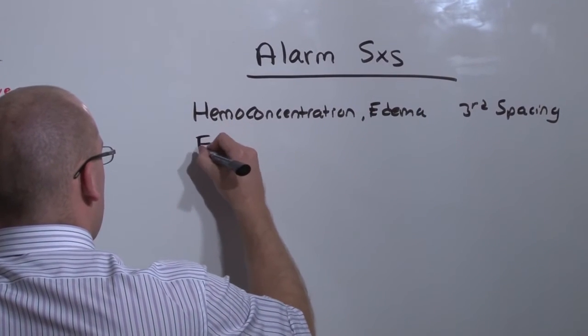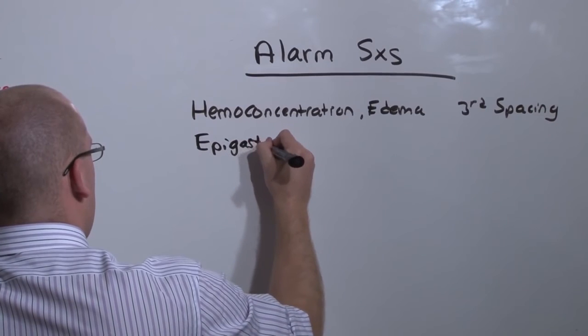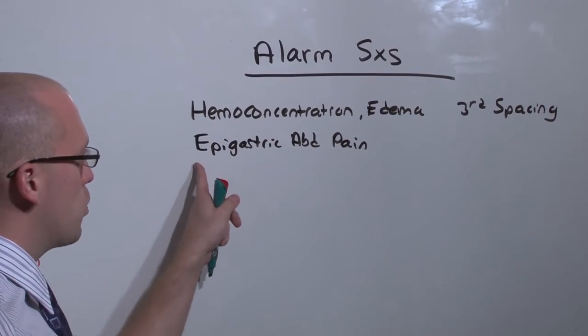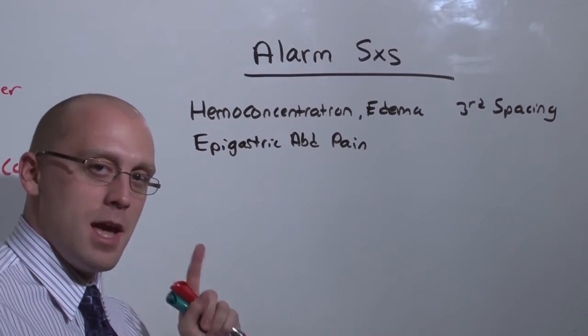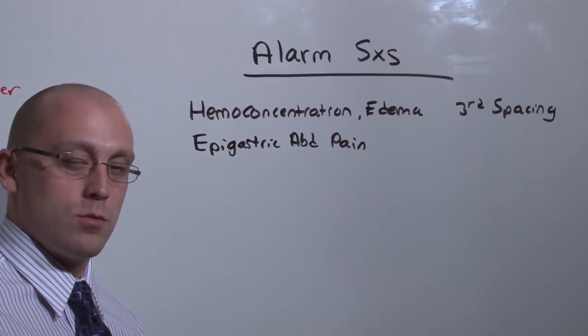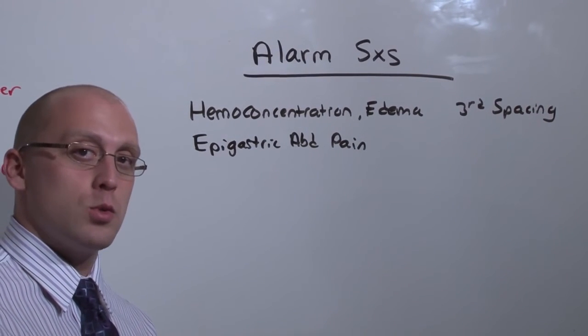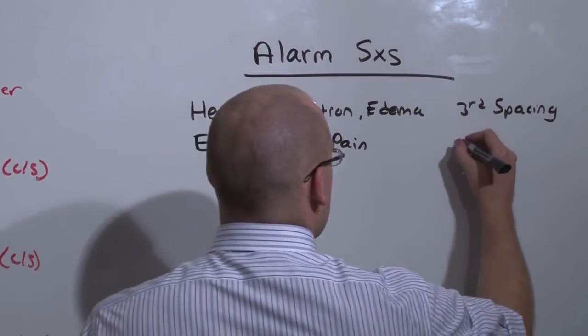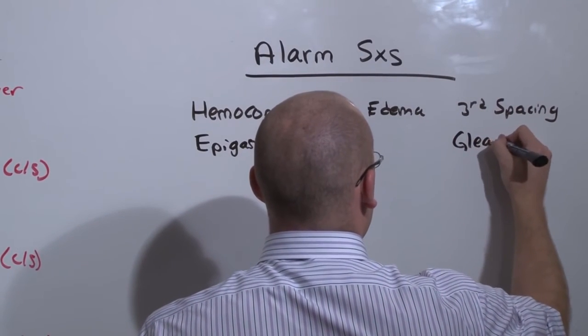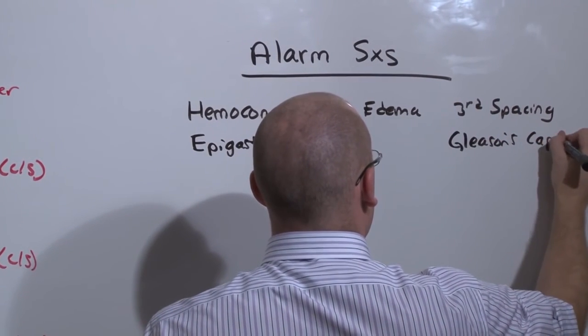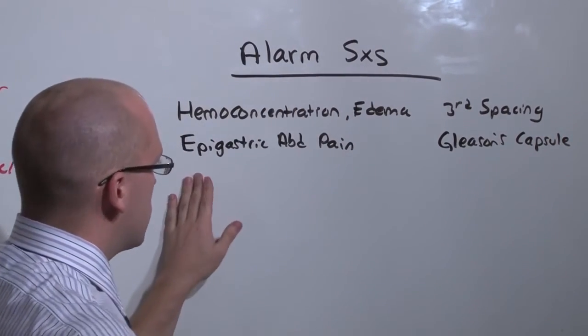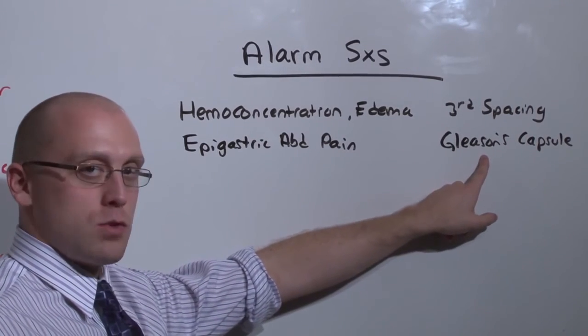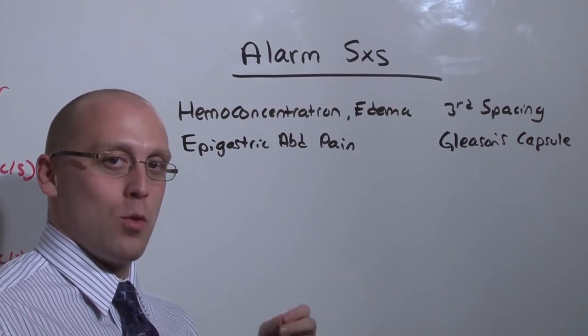Epigastric abdominal pain is often written off. Because after all, pregnant women often have GERD, which will present as epigastric abdominal pain. But in HELP syndrome, from the swelling of the liver, which is why you get elevated liver enzymes, which is also true in preeclampsia and eclampsia because of that vasoconstriction and thrombosis, what you'll get is Gleason's capsule stretching.